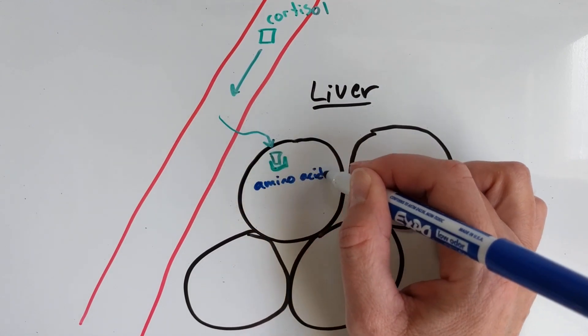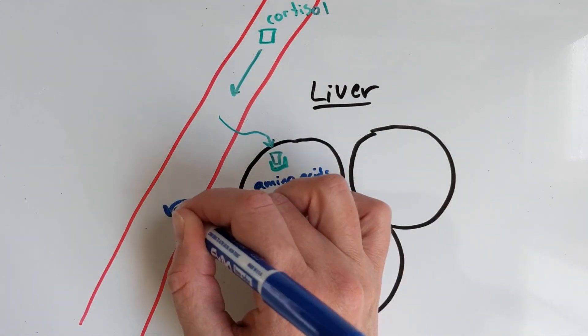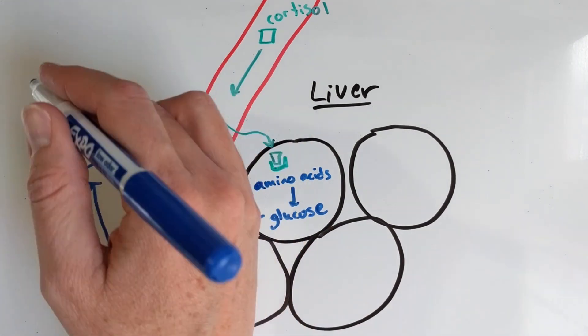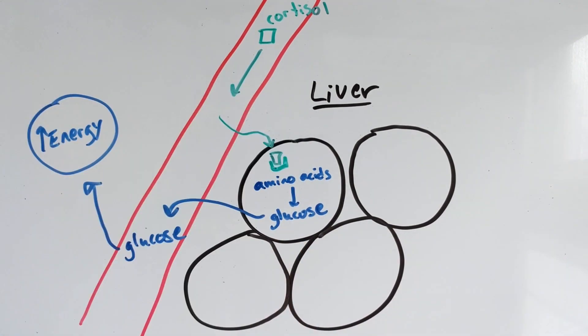Cortisol travels to the liver and signals cells to synthesize glucose from amino acids. This increases glucose in the blood, so your other cells can use it for energy to fuel chemical reactions and molecular work. This helps your body deal with the stress so you can perform well and ace your exam.